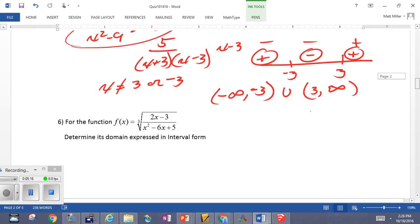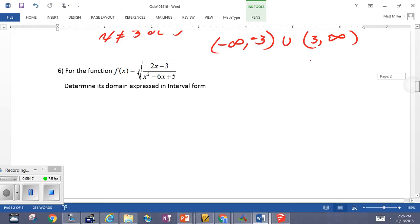Let's do one more in this. We're taking a cube root. Cube root's a little easier because we can take the cube roots of negatives. So, we're not concerned about this expression underneath here being positive, but we are concerned with zeros in the denominator.